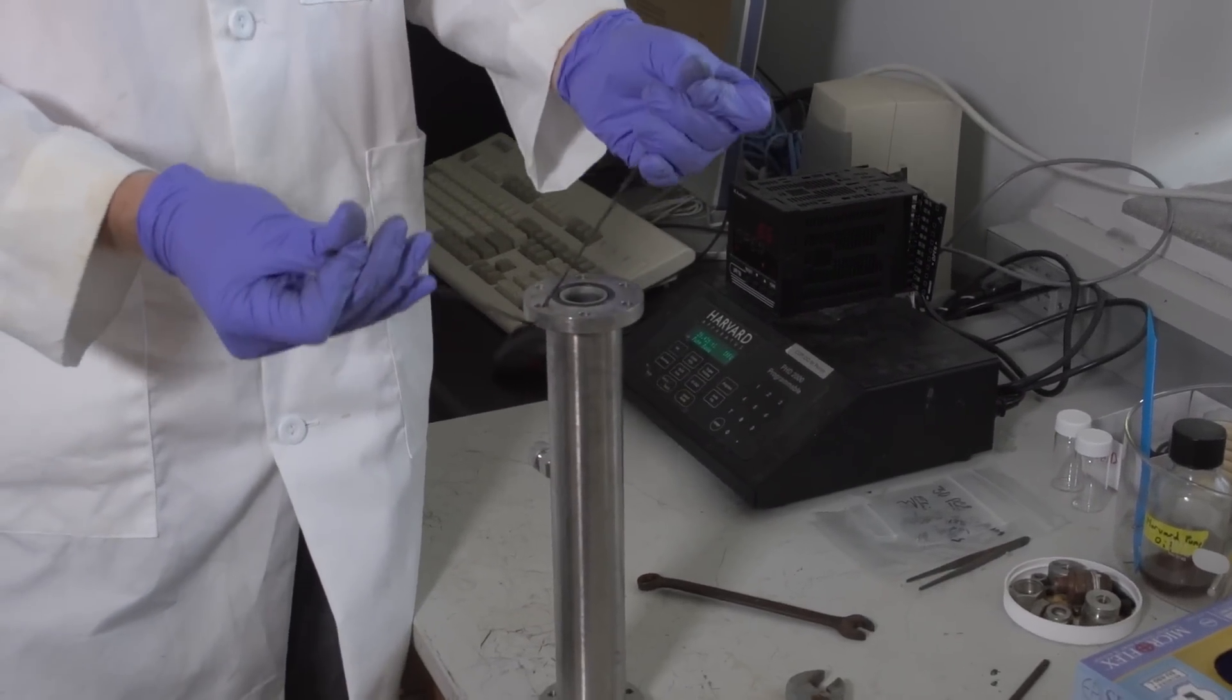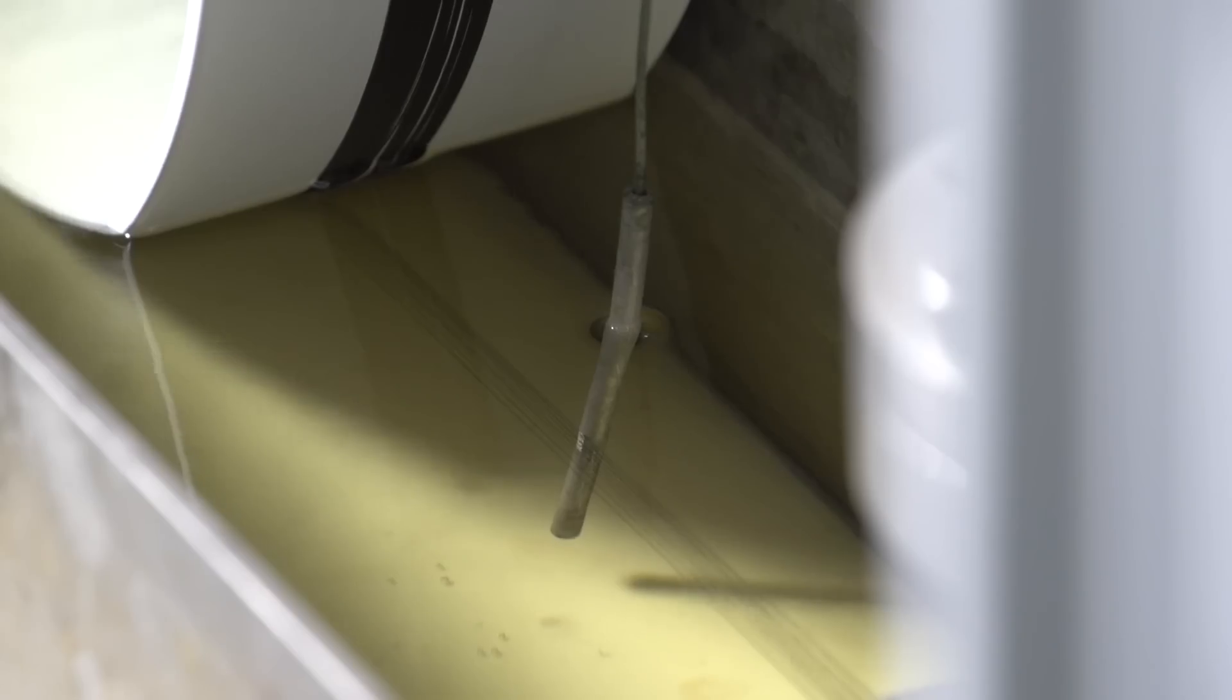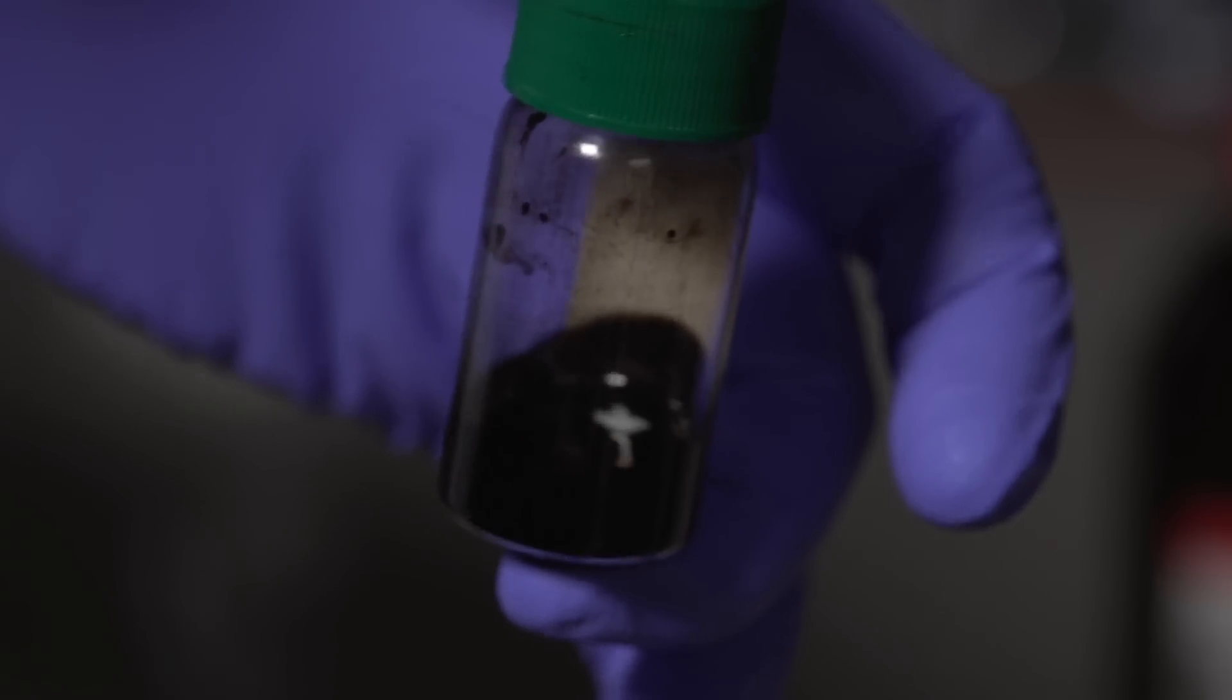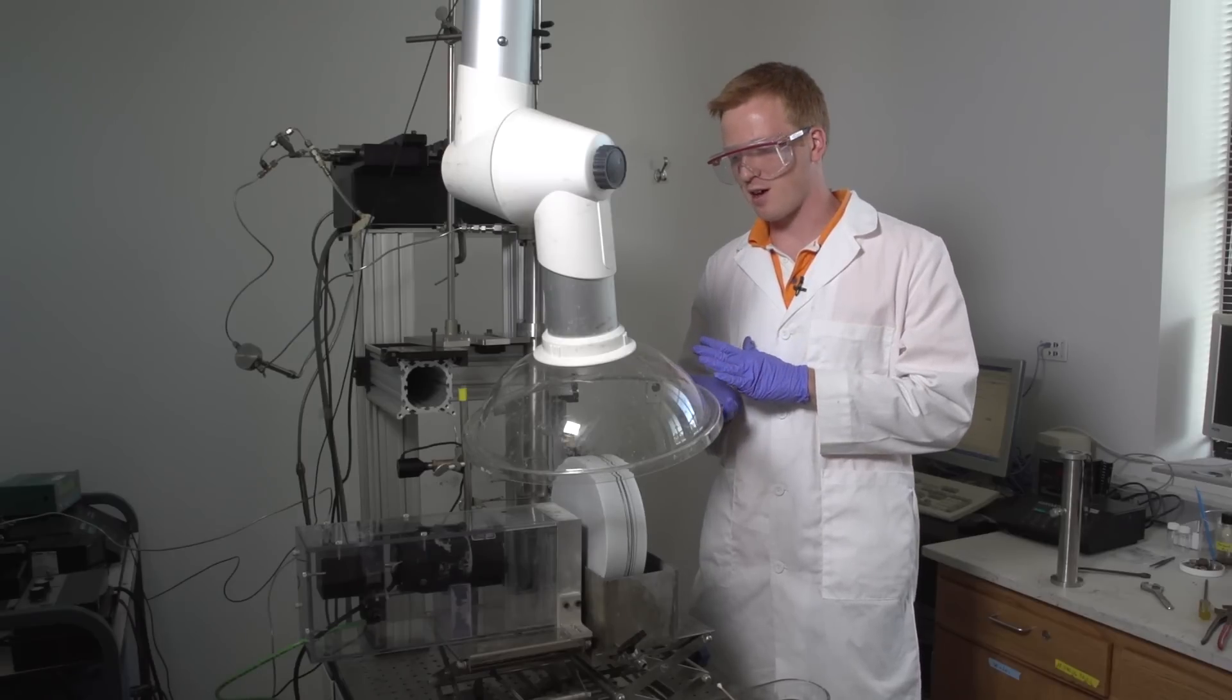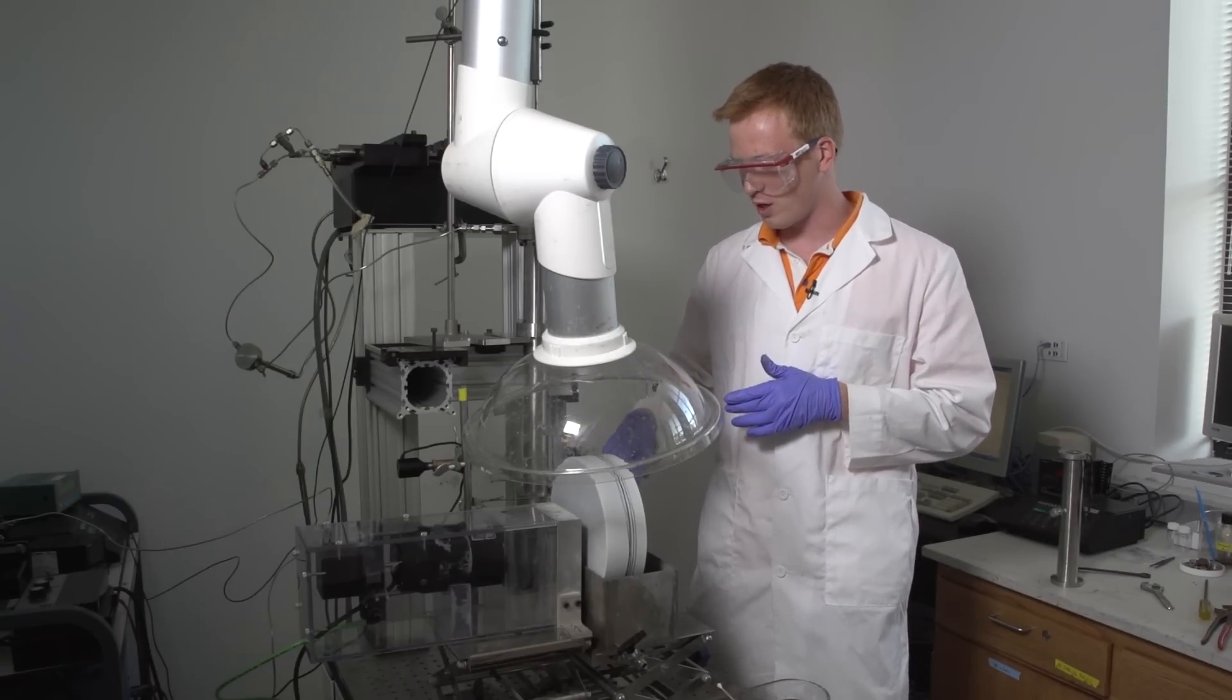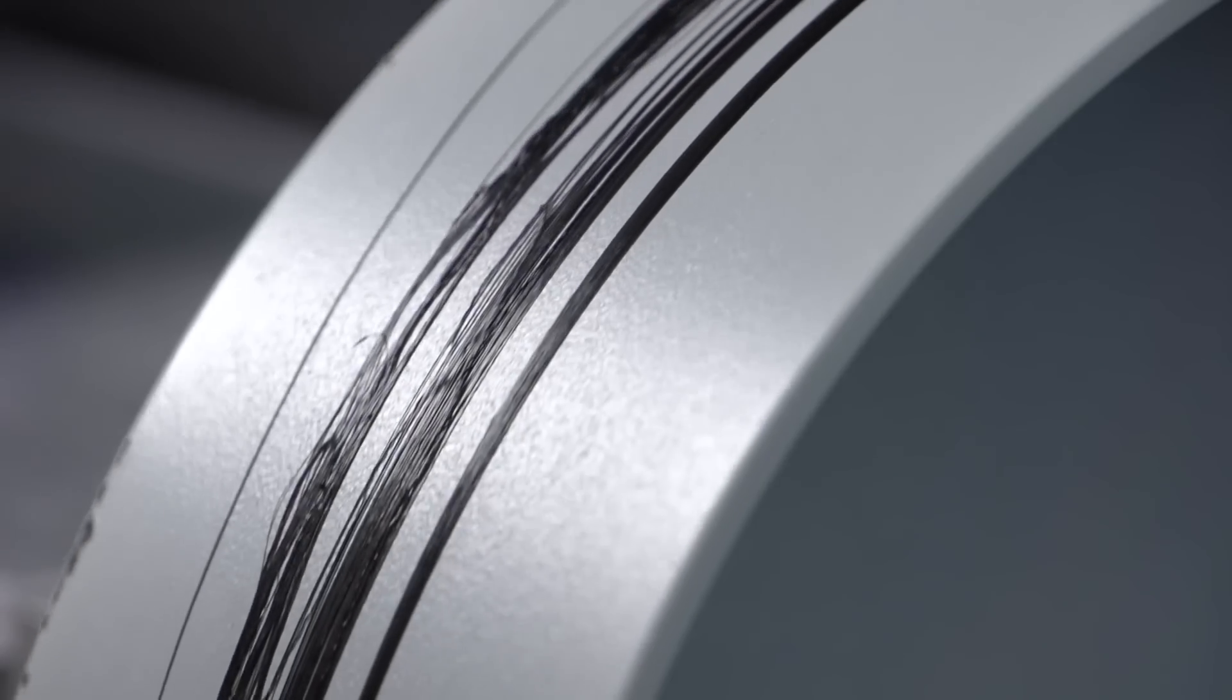This is the spinning cylinder. We have carbon nanotubes that are dissolved in a solvent, which is chlorosulfonic acid. This solution is a very viscous type of material, kind of like mayonnaise in viscosity. And we're extruding it through 19 small holes and then winding it onto a drum.